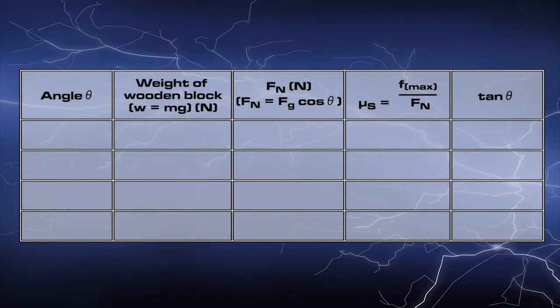Complete the table. The angle theta at which the block just slides is measured at 27 degrees. The weight of the wooden block is equal to 0.25 times 9.8 which is equal to 2.45 newton. The normal force is equal to 2.45 times the cos of 27 which is equal to 2.18 newton.